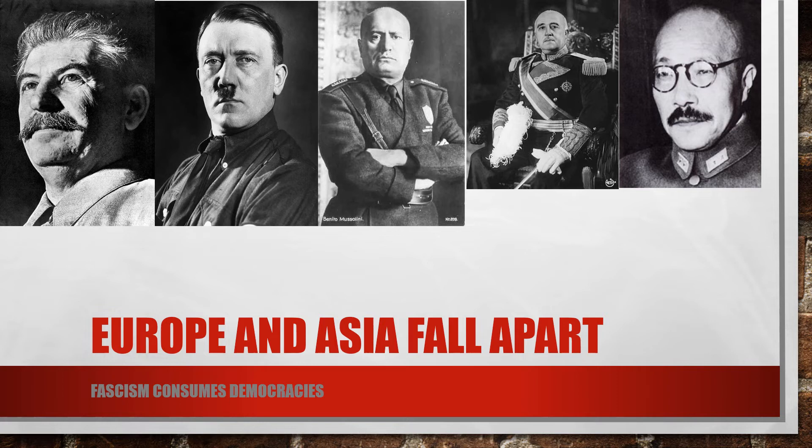Europe and Asia are falling apart. You see the major fascist dictators — Joseph Stalin on the left, running the Soviet Union brutally, killing millions of his own people with vast industrialization projects. He helps quote industrialize the Soviet Union but at a very huge environmental and human cost. Then Hitler with the Nazis. Then Benito Mussolini. Then Francisco Franco — who will win the Spanish Civil War by the late 1930s and bring fascism to Spain.